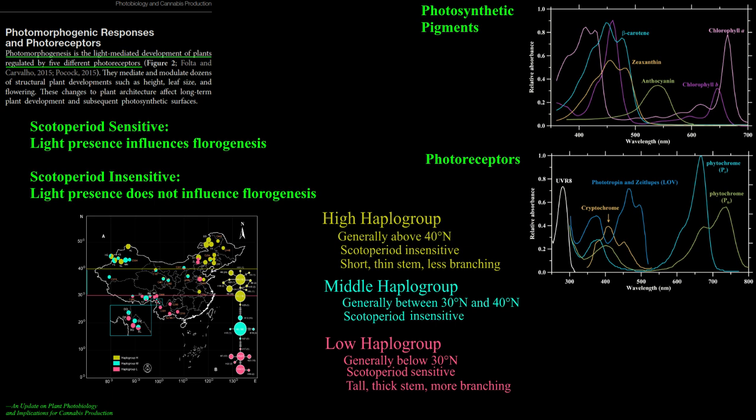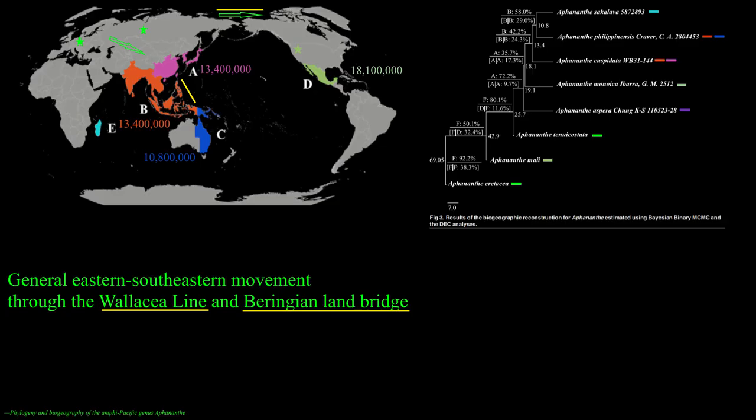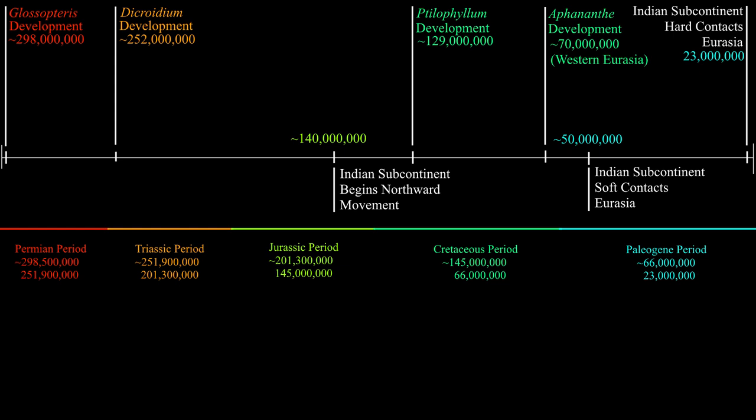Ultimately, piecing together the millions of years of evolutionary history of a species of plant is difficult, with much detail unavailable. However, given that Afnantha successfully proliferated across Eurasia, Australia, and North America, a biogeographically southern Chinese speciation event for cannabis is not an impossibility, and an Indian speciation event may also be possible, considering recent research into its paleogeographic movement from proximity to Antarctica towards the Eurasian continent.